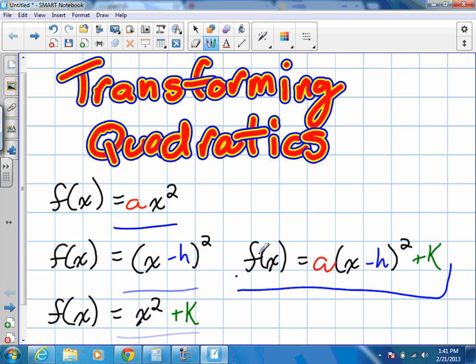Specifically, this is what they would all look like if we put them together in an equation, and each of these unknown variables, our A, H, and K, do something different to the parabola, or the quadratics, depending on what you want to call it.